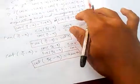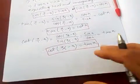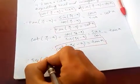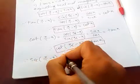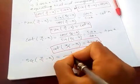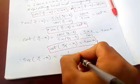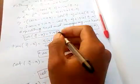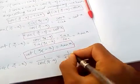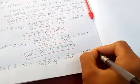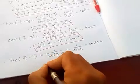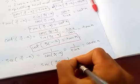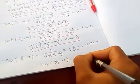For sec and cosec: sec(90-x) is the reciprocal of cos(90-x), which is 1 over sin x, and 1 over sin x is cosec x. Therefore sec(90-x) = cosec x.